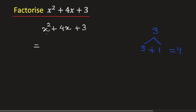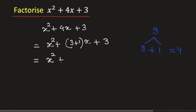So we can write this expression as x squared plus 4x, where 4x can be written as 3 plus 1 times x plus 3. Simplifying, we will get x squared plus 3x plus x plus 3.